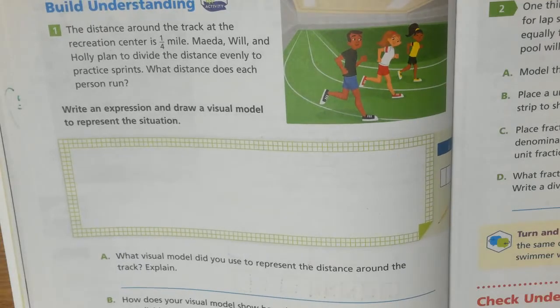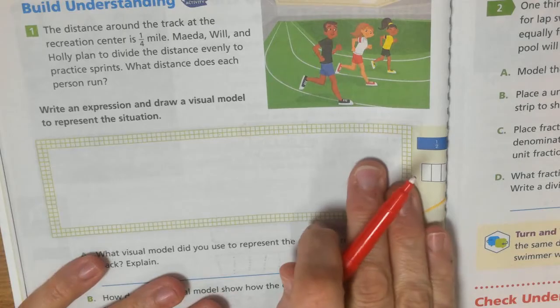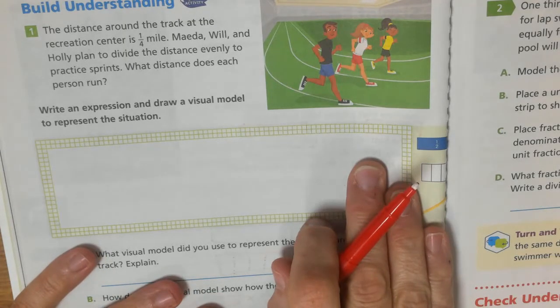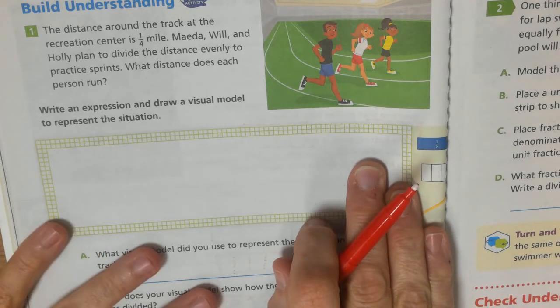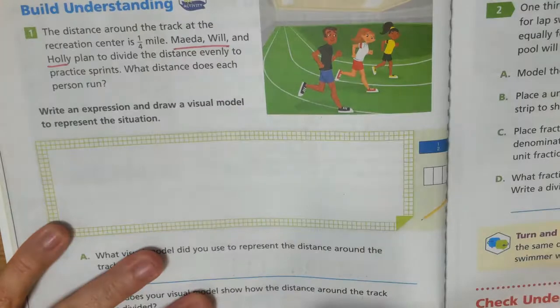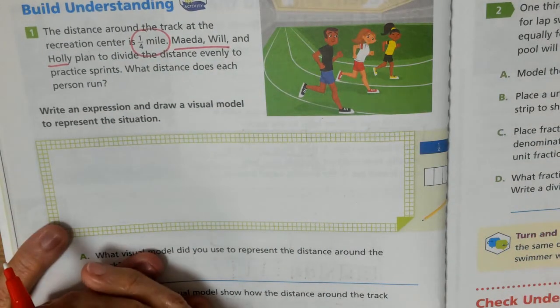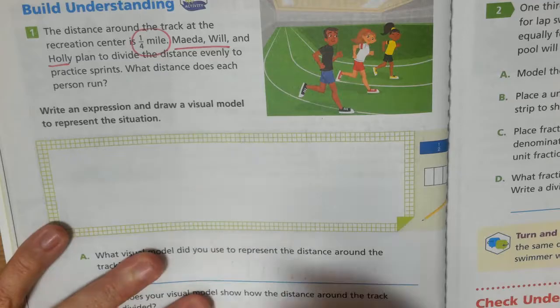The distance around the track at the recreation center is one fourth mile. Madea, Will, and Holly plan to divide the distance evenly to practice sprints. What distance does each person run? We have three people, and they're dividing the one fourth of a mile by three.